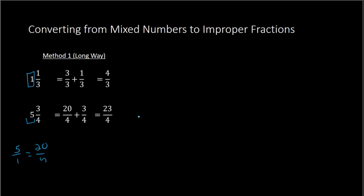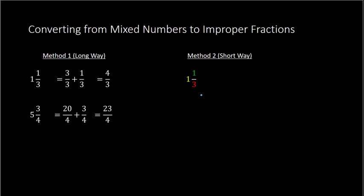Here is the short method. With 1 and 1 third: we take the whole number 1 times the denominator 3, then add the numerator 1. So 1 times 3 plus 1 gives us the numerator. The denominator stays as 3. So 1 times 3 plus 1 equals 4, giving us 4 over 3.